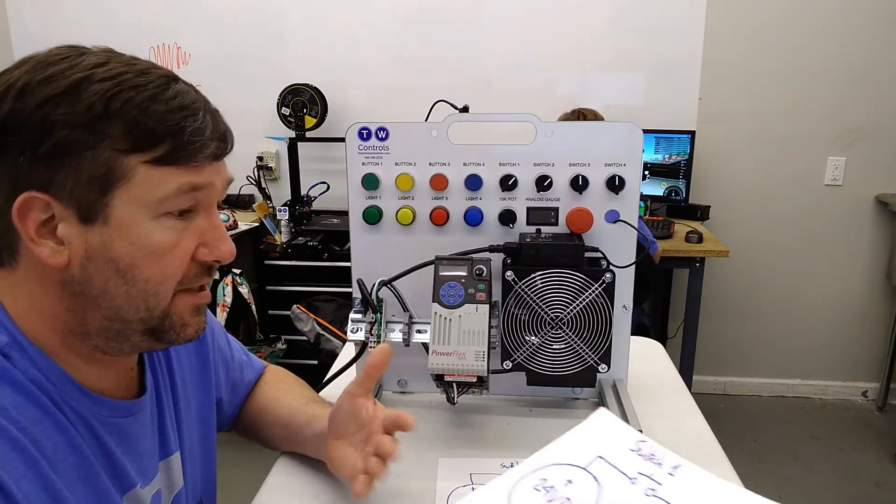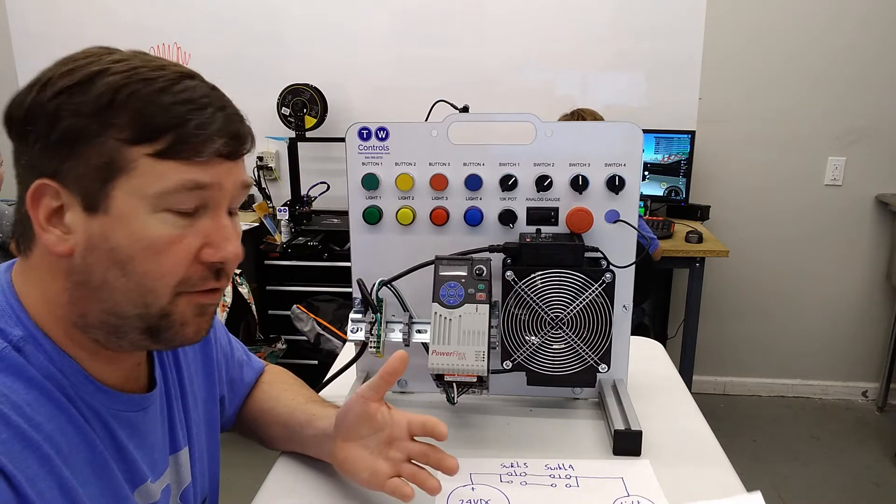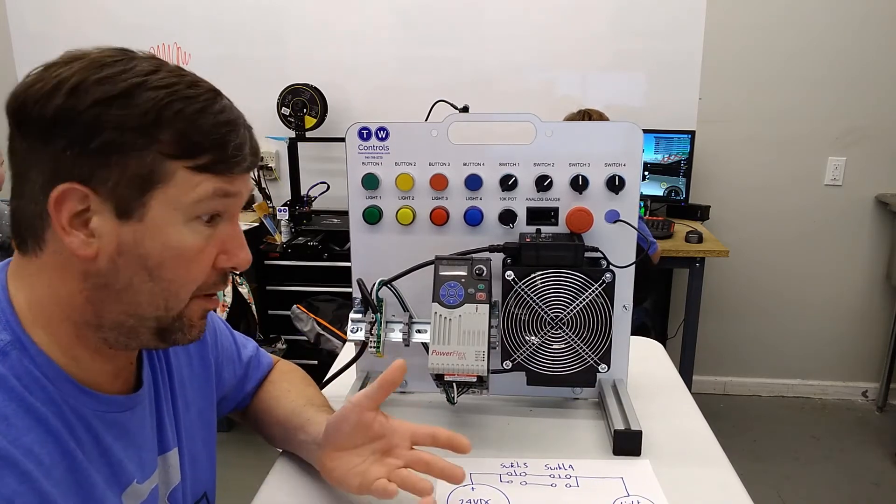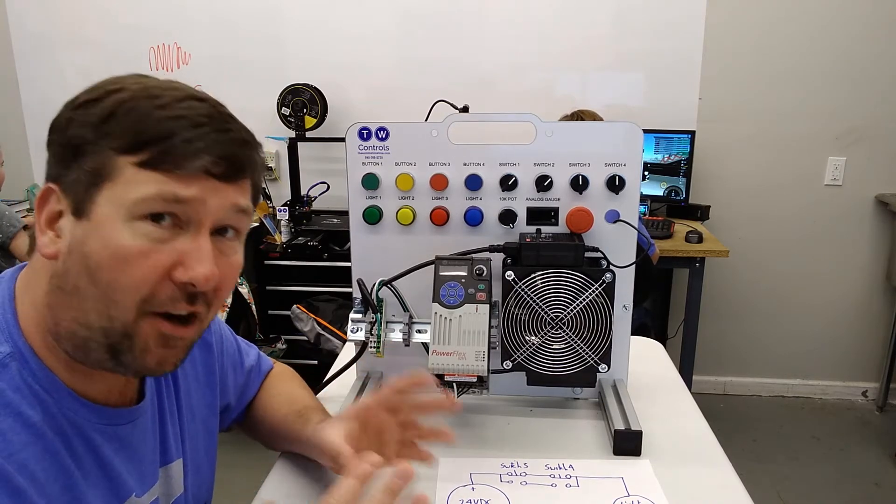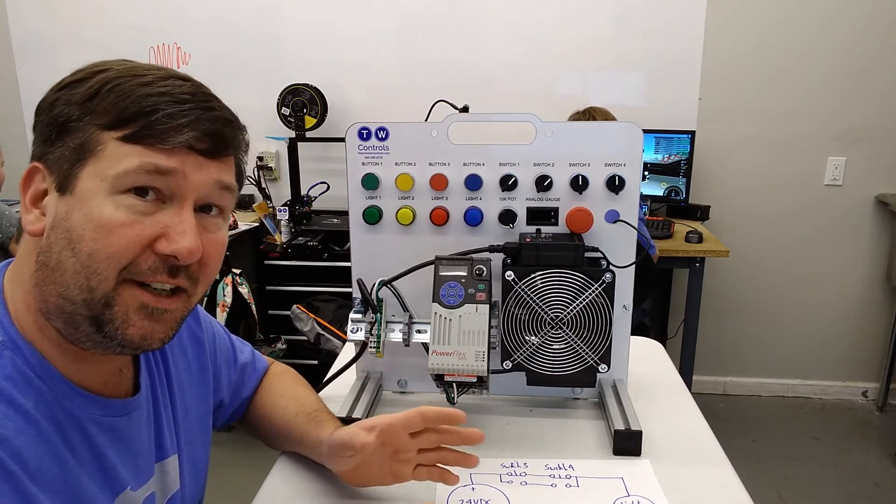In a lot of situations, like say you've got a room that you can enter from both sides or a set of steps where you want a light switch at the top and the bottom, you'll have what they call a three-way light circuit.